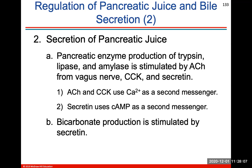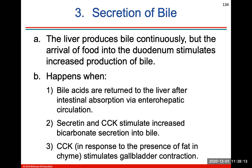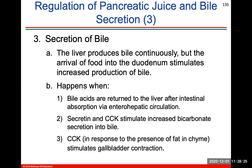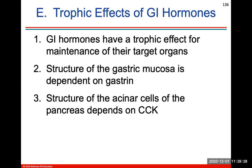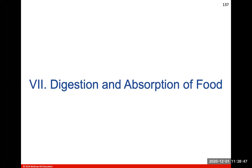The duodenum's secretion of pancreatic juice is also under hormonal control. The liver produces bile continuously, but the arrival of food into the duodenum will stimulate increased production of bile when more hormones are produced. Specific hormones have an effect on their target organs — the cells that will secrete the necessary substances and enzymes needed for digestion. The structure of the gastric mucosa is dependent on gastrin, and the structure of the acinar cells of the pancreas depends on CCK.